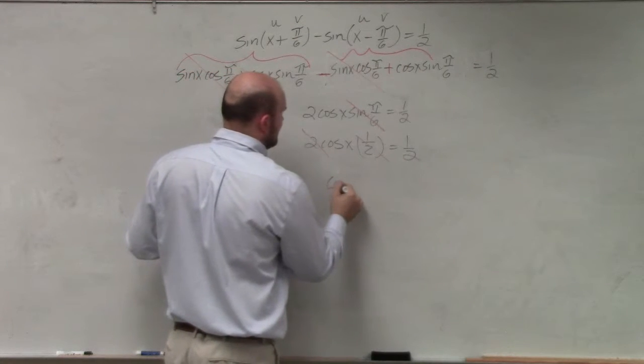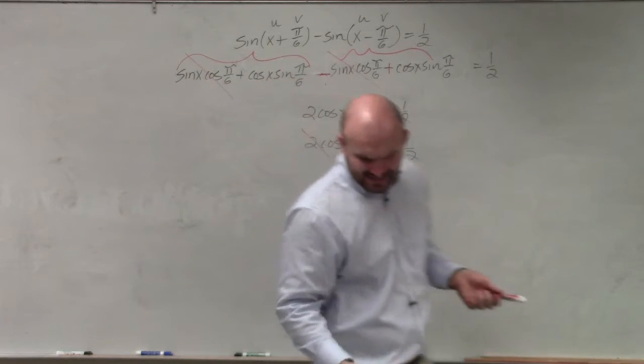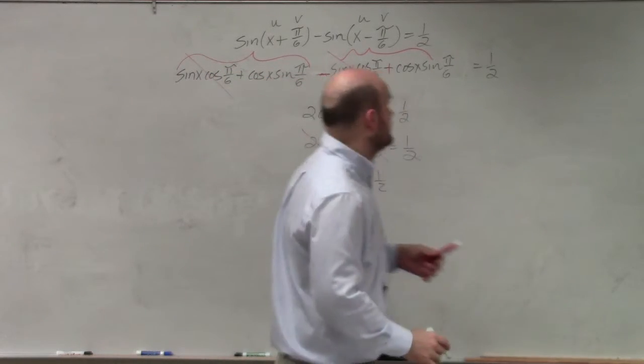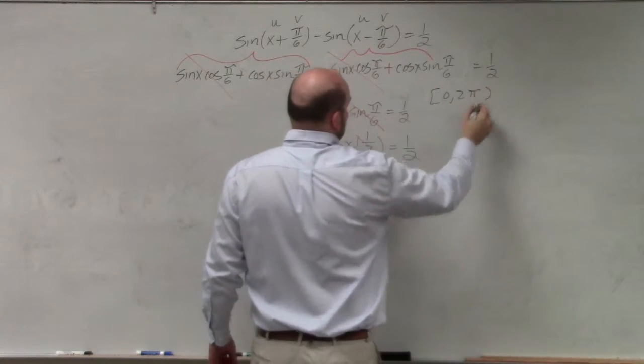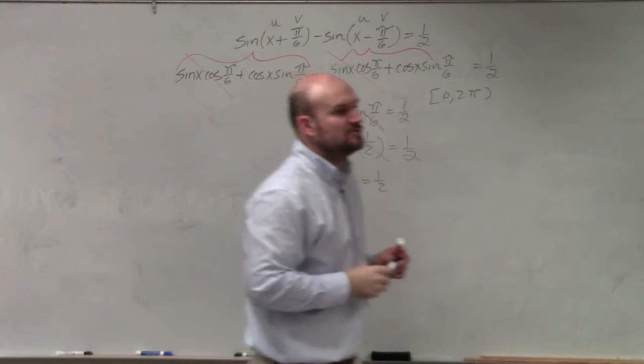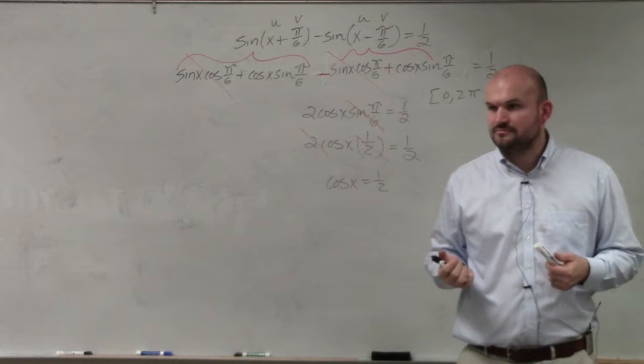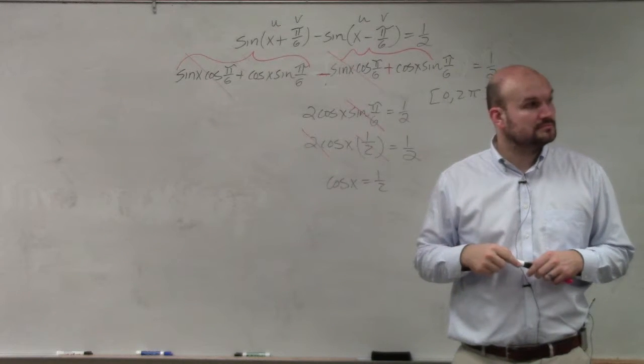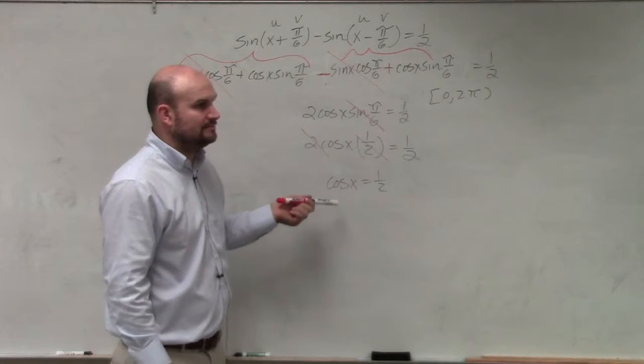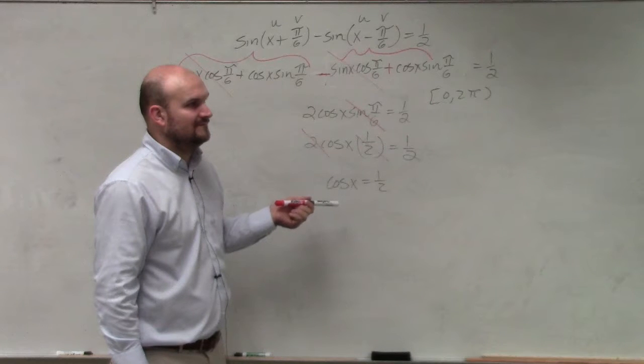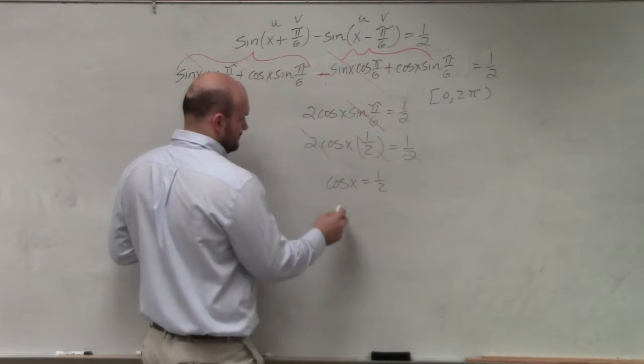Now we have cosine of x equals 1 half. So what angles - and again, I forgot to mention, this is finding all the angles between 0 and 2 pi. What are all the angles when cosine of x is equal to 1 half? Pi over 3. And is that the only one? And 5 pi over 3.